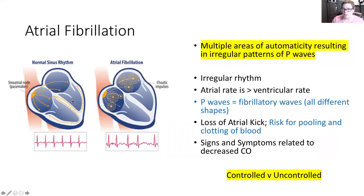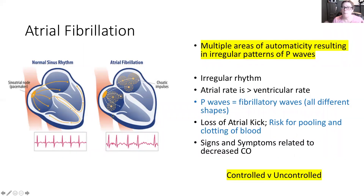With atrial fibrillation, if we compare that to normal sinus — I always like to compare to baseline — in normal sinus the SA node is the pacemaker, it sets the tone, the rate, the rhythm, and communicates that information downstream through the internodal pathway to the AV node to the ventricles, giving us our characteristic waveforms and intervals. With atrial fibrillation, what we have is actually an irritation of the tissue between the SA node and the AV node, with multiple sites of irritation, as opposed to a premature atrial contraction where there is only one site.